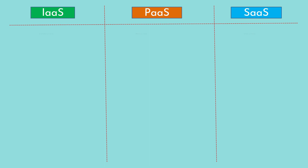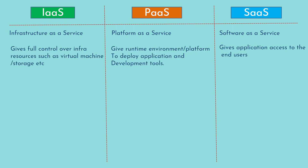Now let's talk about the difference between IaaS, PaaS, and SaaS. IaaS, as the name suggests, is Infrastructure as a Service; PaaS is Platform as a Service; and SaaS is Software as a Service. IaaS gives you full control over the infrastructure resources such as your virtual machine and storage. You can rent these resources from a cloud provider and configure them as needed. You install your own operating system, configure all your custom applications, and take care of all management and administrative tasks. In PaaS, they provide you a runtime environment and a platform to deploy your application and development tools. You do not get access to the underlying operating system — you get access to their software environment in which you can deploy your application and start using it.